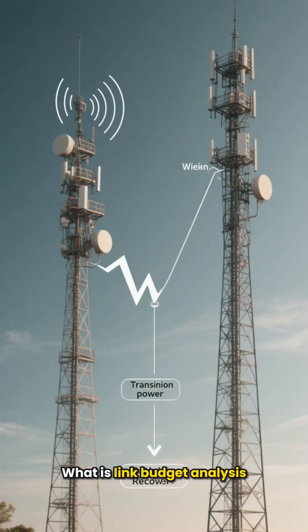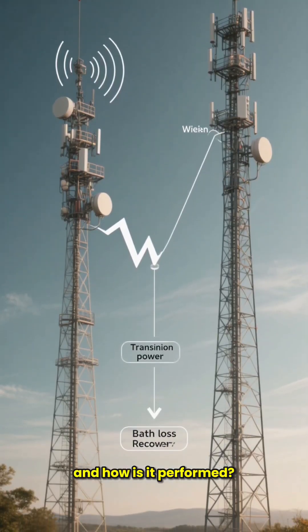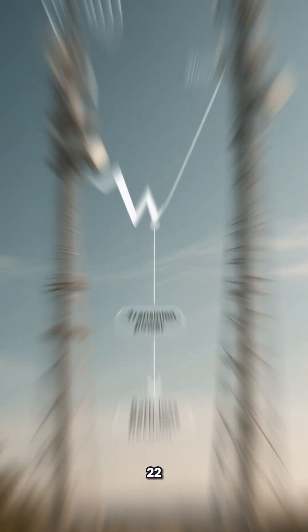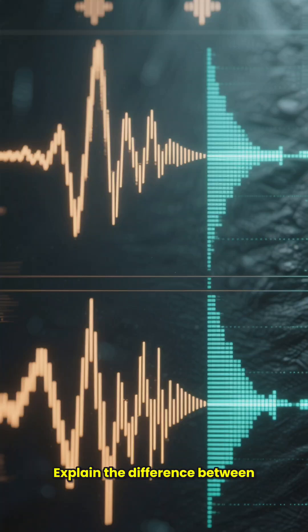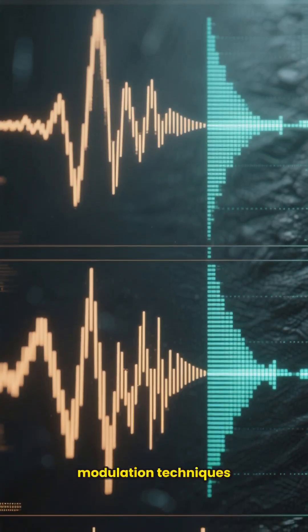Question 21: What is link budget analysis and how is it performed? Question 22: How do you design an RF system to minimize noise? Question 23: Explain the difference between analog and digital modulation techniques.